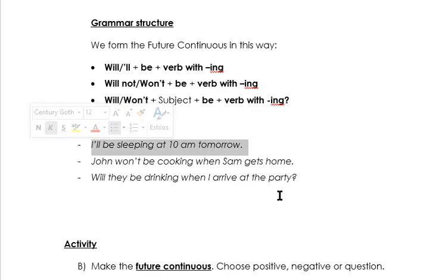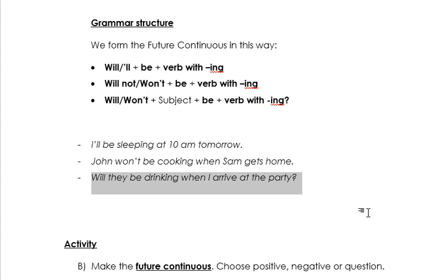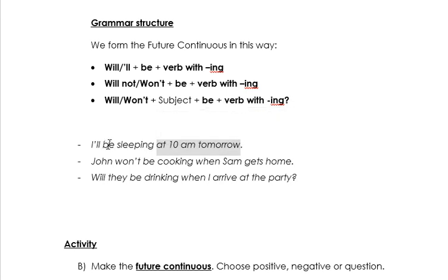Here we have examples: 'I'll be sleeping at 10am tomorrow.' 'John won't be cooking when Sam gets home.' 'Will they be drinking when I arrive at the party?' Estas son todas acciones que están hablando del futuro, y son acciones que van a estar en progreso en este futuro.